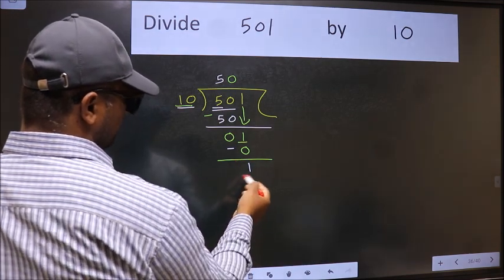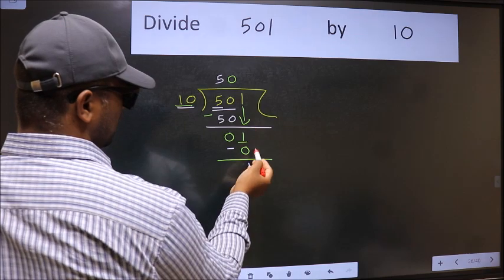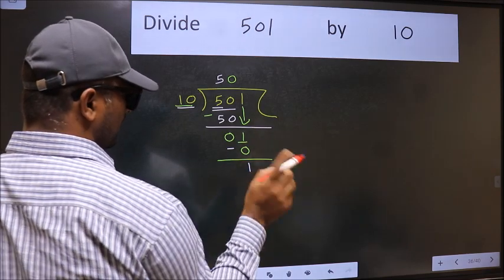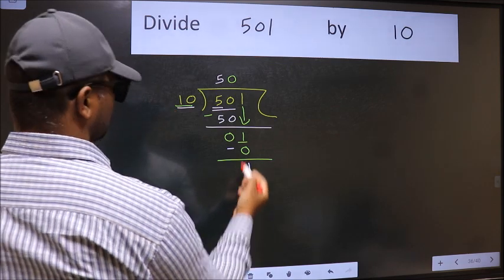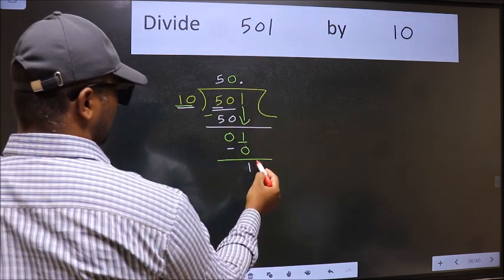We get 1. Over here, we did not bring any number down. And 1 is smaller than 10. So now we can put dot and take 0.